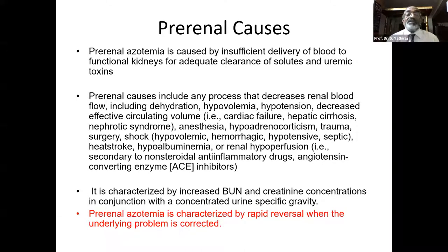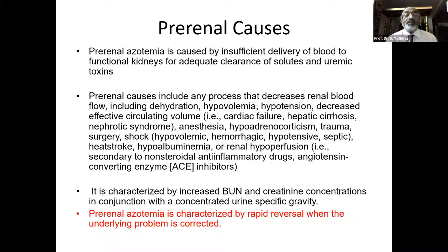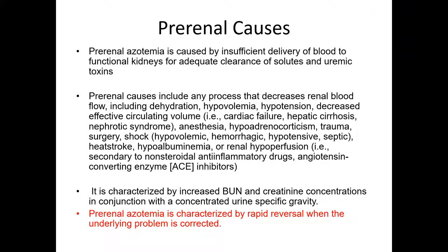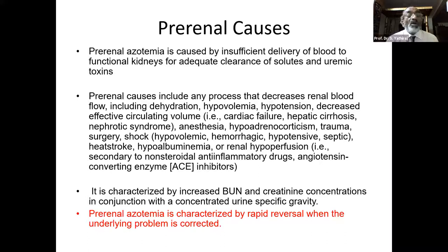Pre-renal causes include anything that can cause a decrease in blood flow — for example, dehydration, hypovolemia, hypotension, decreased effective circulating volume as seen in cardiac failure, hepatic cirrhosis, nephrotic syndrome, post-anesthesia, hypoadrenocorticism, trauma, surgery, shock. It could be hypovolemic, hemorrhagic, hypotensive, septic, heat stroke, hypoalbuminemia, or renal hyperperfusion secondary to NSAIDs, ACE inhibitors specifically used in cardiac and hepatic patients — all these are pre-renal causes where azotemia can be a feature.